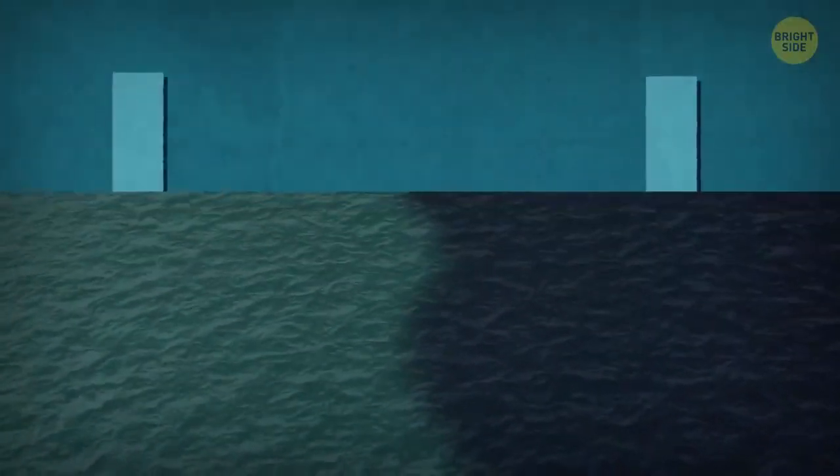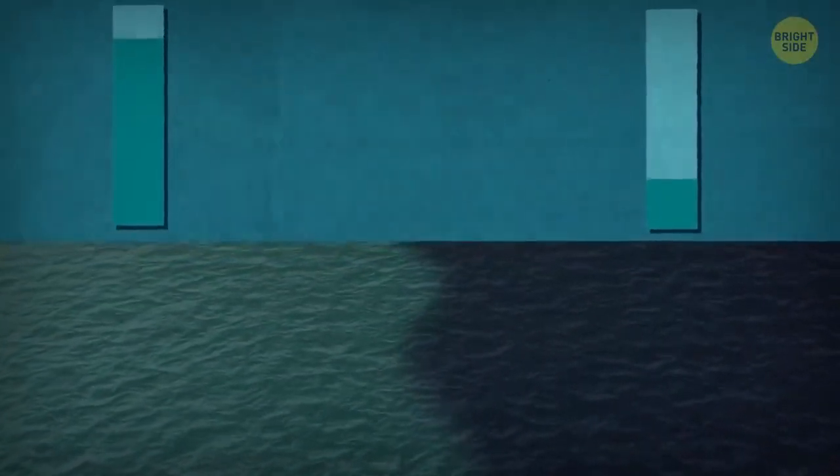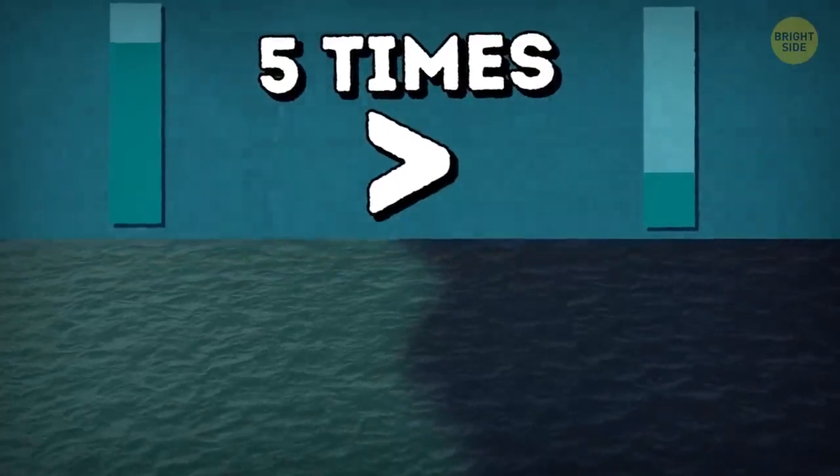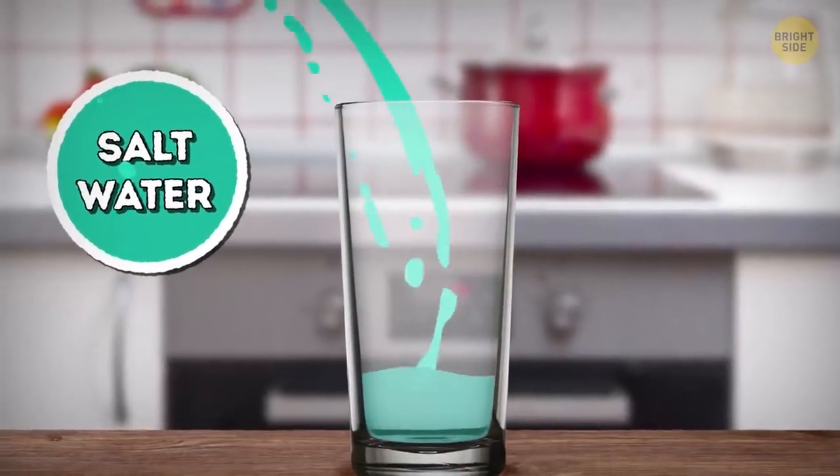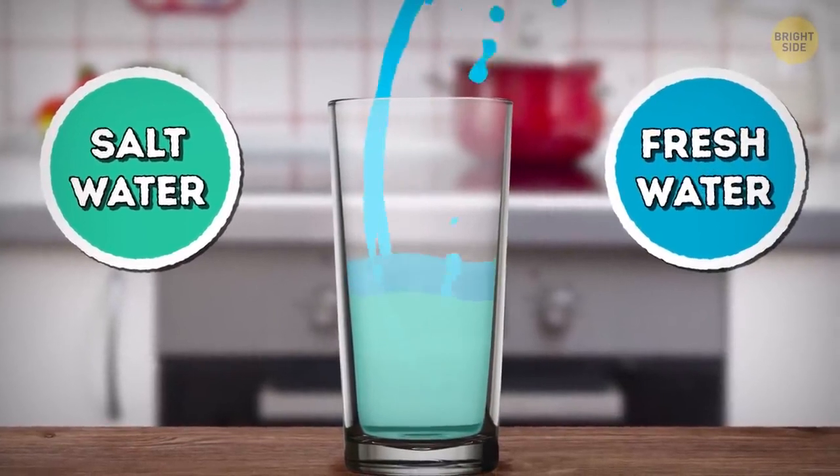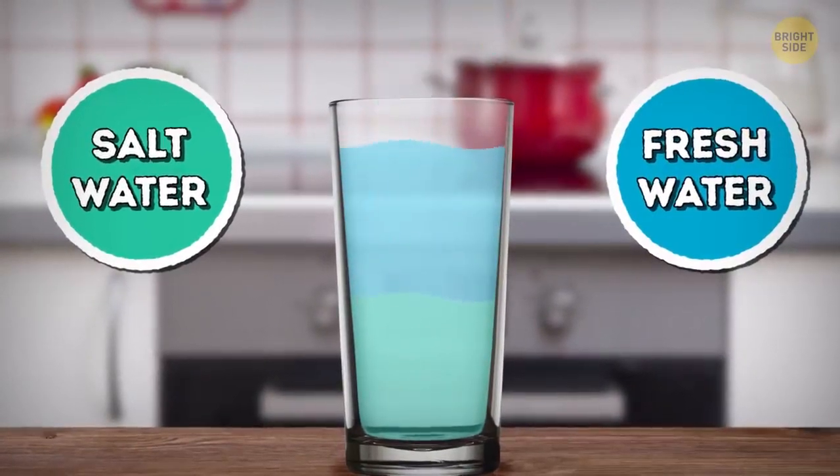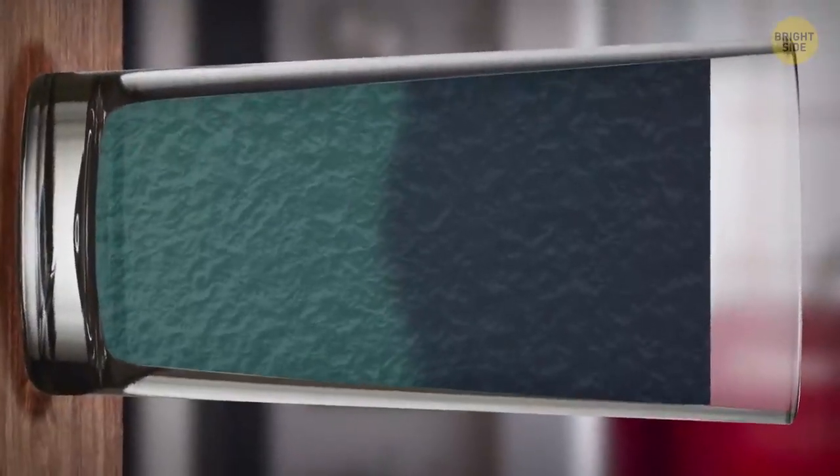Haloclines appear when the water in one ocean or sea is at least five times saltier than in the other. You can create a halocline at home if you pour some seawater or colored salty water in a glass and then add some fresh water on top of it. The only difference is that your halocline will be horizontal, and ocean haloclines are vertical.